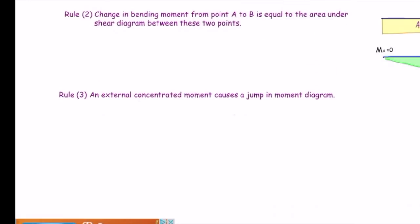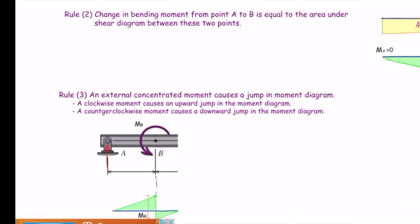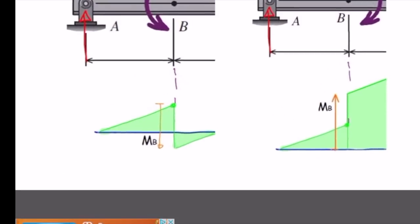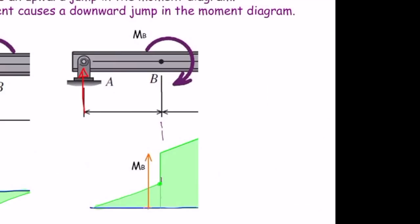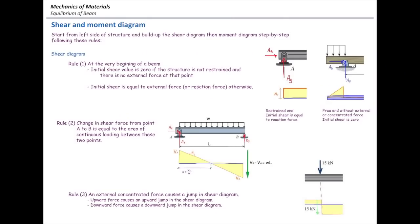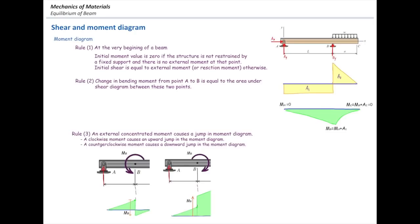Rule number three for moments: a clockwise concentrated moment causes an upward jump in the moment diagram, while a counterclockwise moment causes a downward jump. Using all of these rules, we can quickly and efficiently determine the shear and moment diagram for various problems.